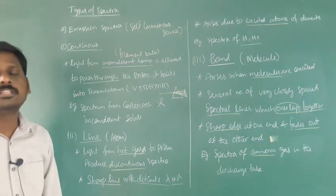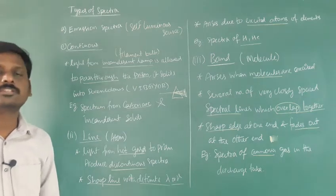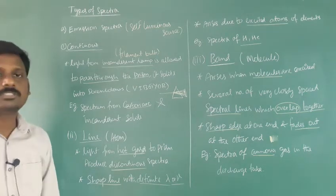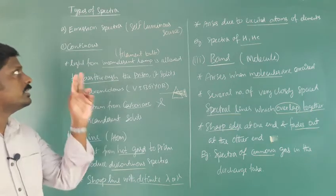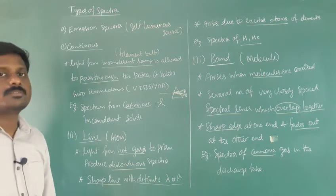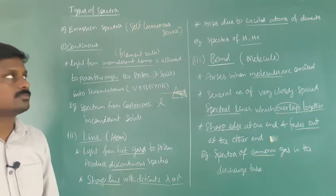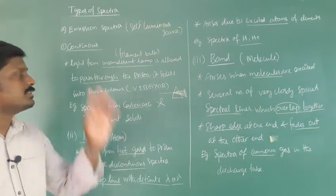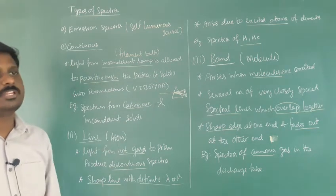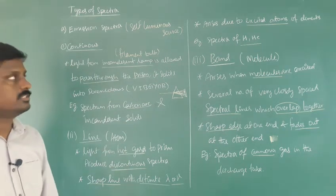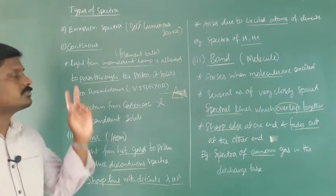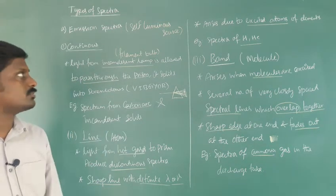Good morning students. In this class we are going to discuss about types of spectra. There are two types of spectra: emission spectra and absorption spectra. In this class we are going to discuss about emission spectra. The spectra from a self-luminous source is emission spectra. The emission spectra is of three types.